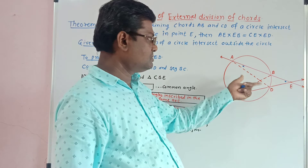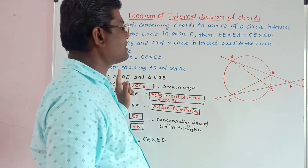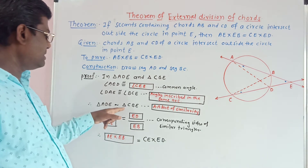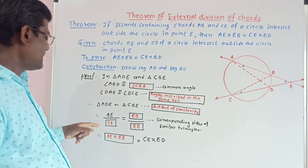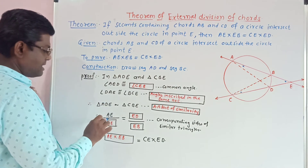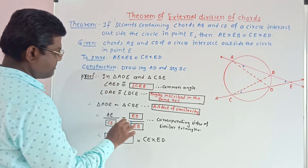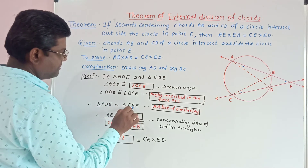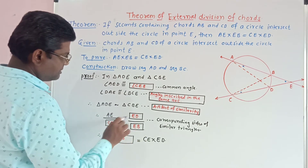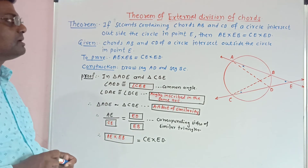Triangle ADE is similar to triangle CBE. Taking ratio of corresponding sides: AE/CE = ED/EB. Cross multiplication: AE × EB = CE × ED. Thus, theorem of external division of chords is proved.